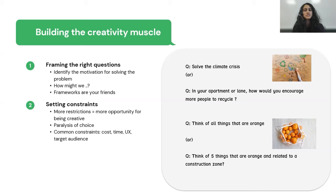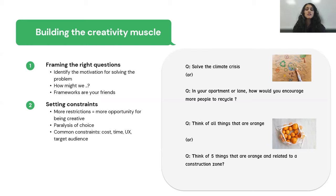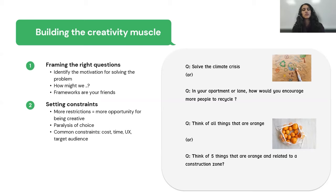Some common constraints that apply to PMs might be cost, engineering resources, timeframes, timelines, and the target audience. As a PM, consider timeboxing all ideation because it can really stretch on forever. Maybe limiting it to a week or 10 days can give you a deadline that forces you to think better and faster about a particular problem.